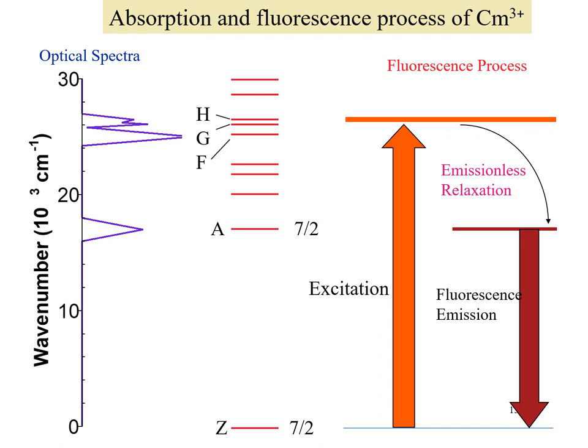One of the interesting spectroscopic properties of curium is fluorescence. For curium-3, absorbances between 375 and 400 nanometers excite the electrons to a level where they undergo an emissionless relaxation to a state with spin 7/2, which is the same as the ground state, followed by fluorescence emission. The energy and lifetime of this process can be measured and gives information about the electronic structure, which is dictated by the speciation of the curium. This fluorescence process is very sensitive to evaluating curium speciation in solutions and solids.